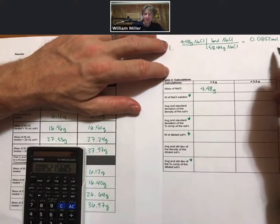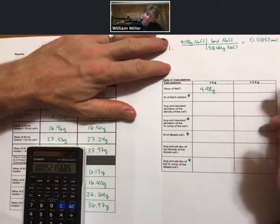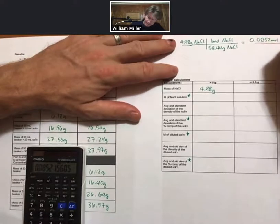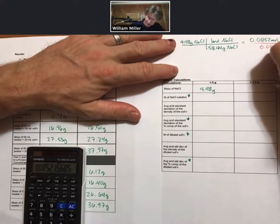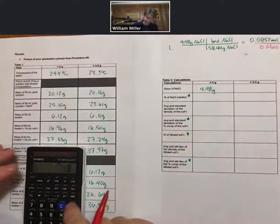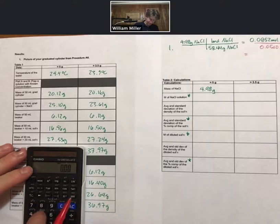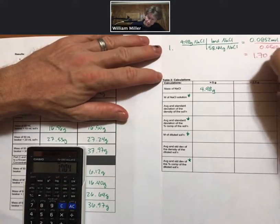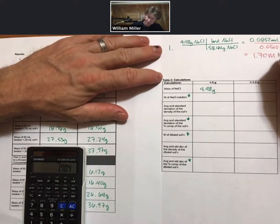And then that was put into 50 milliliters of solution, which is 0.0500 liters of solution, to 3 sig figs, 1.7 molarity, sodium chloride.